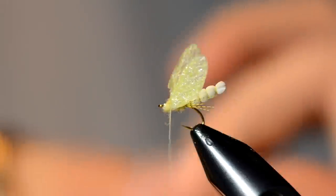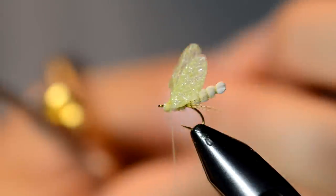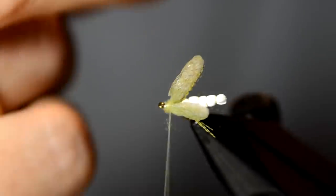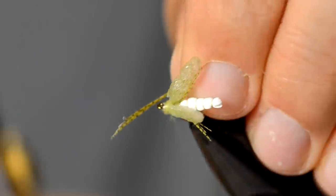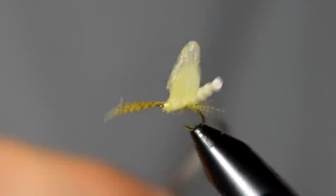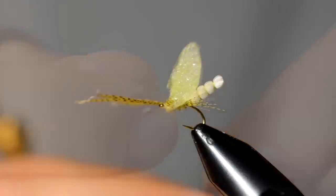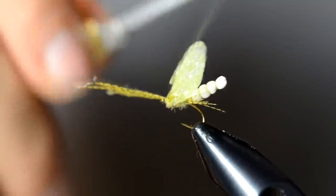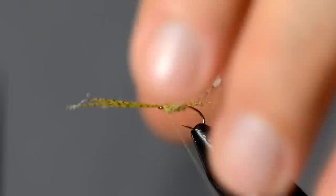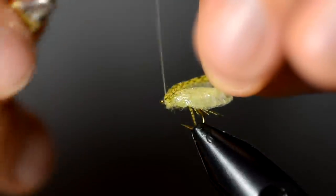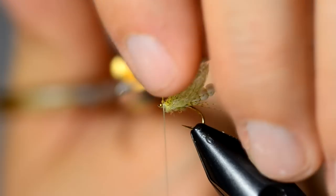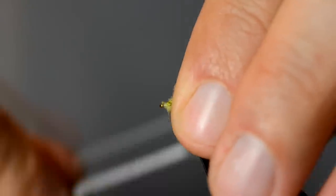I'm going to do the same thing to create some legs in front. You could do hackle here, I'm just going to use this mallard flank because it's easy to use and available. Again, just on each side tie in a set of legs. I've got the orientation like so with a couple of sets now coming off. Pull these down tight and then take a wrap in front, and then build up a head.